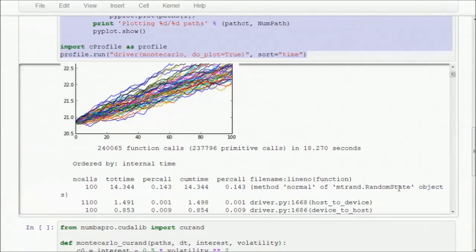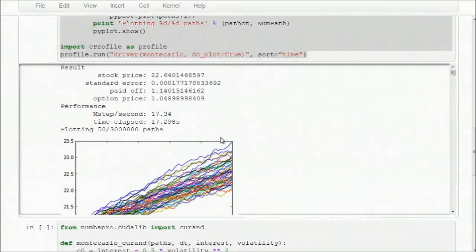Looking at our output, you can see it's the random noise generation where our application is spending most of its time. You can also see our application is taking about 17 seconds to run, and we'll use this number as a benchmark to see how much acceleration we're getting later on.